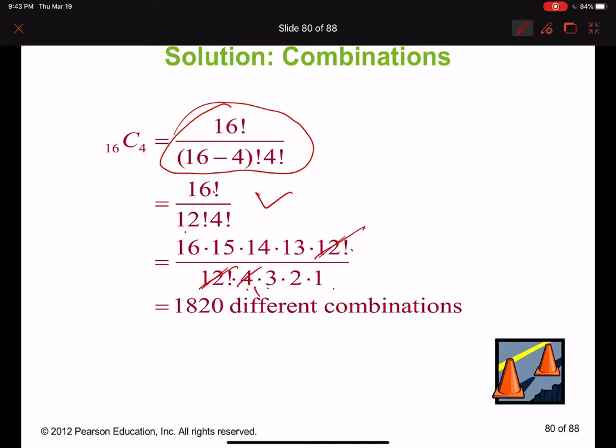They open 16 all the way till 12, 12 cancels with 12, and 4 factorial they open it up so they can reduce with the numerator. 4 is 1, I can reduce with 16 to get 4. 3 is gone with 15 to get 5. 2 is gone with 14 to get 7. So practically we have 4 times 5 times 7 times 13, and it's going to be 1,820.